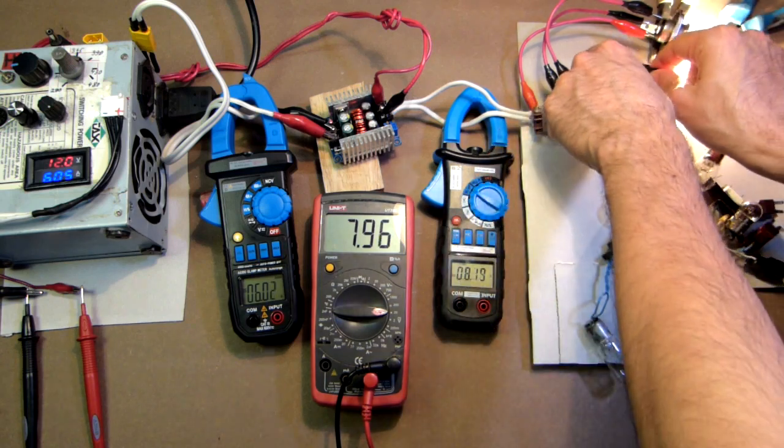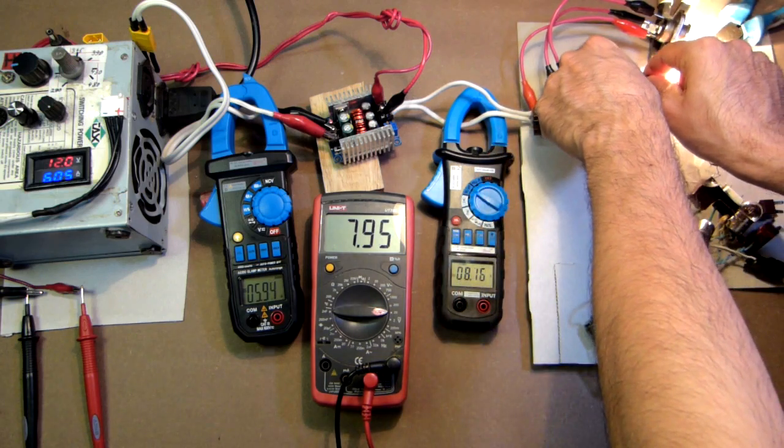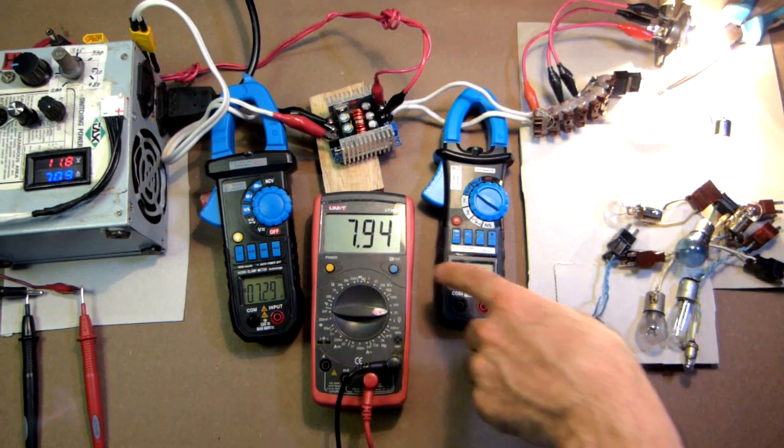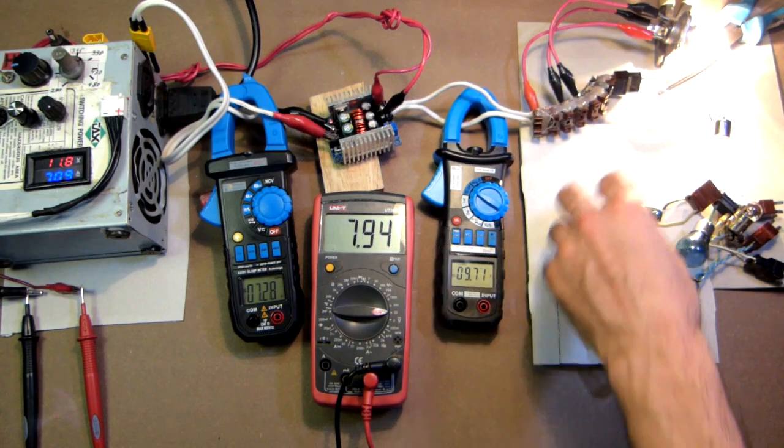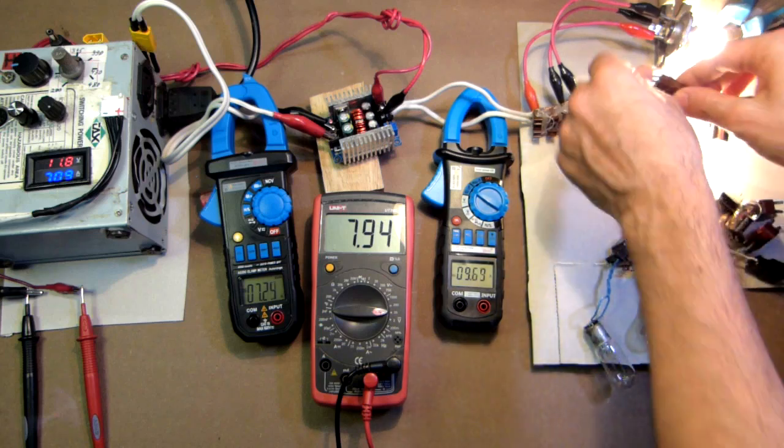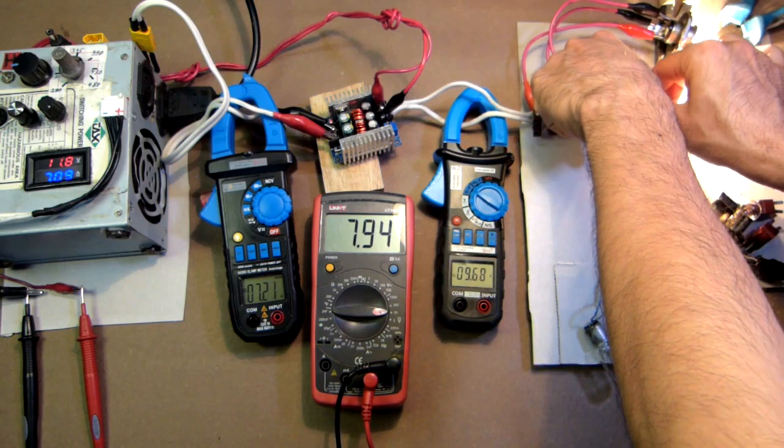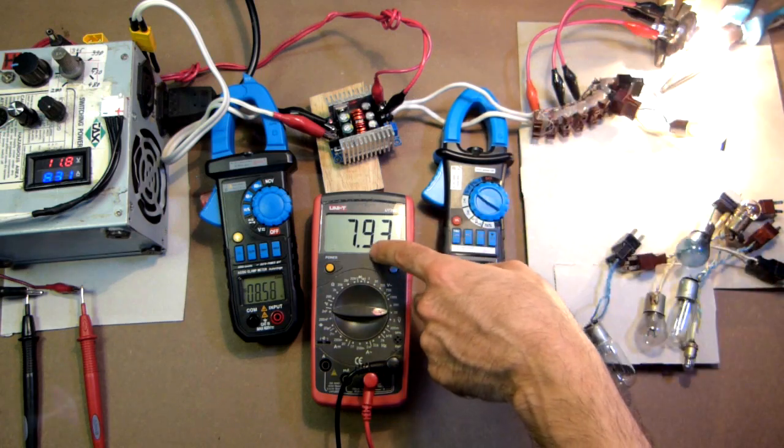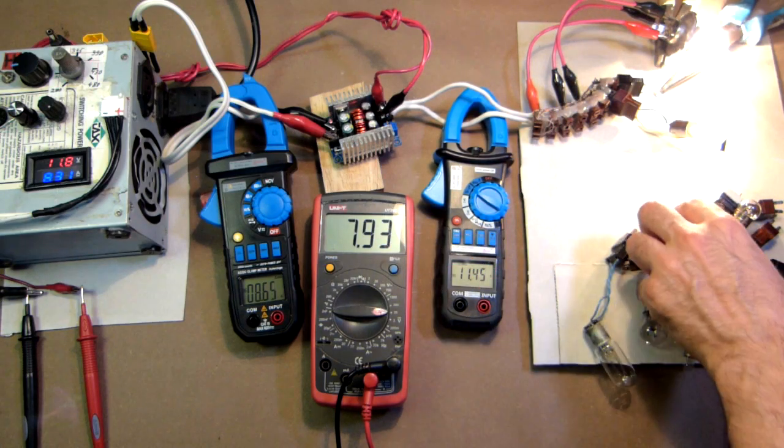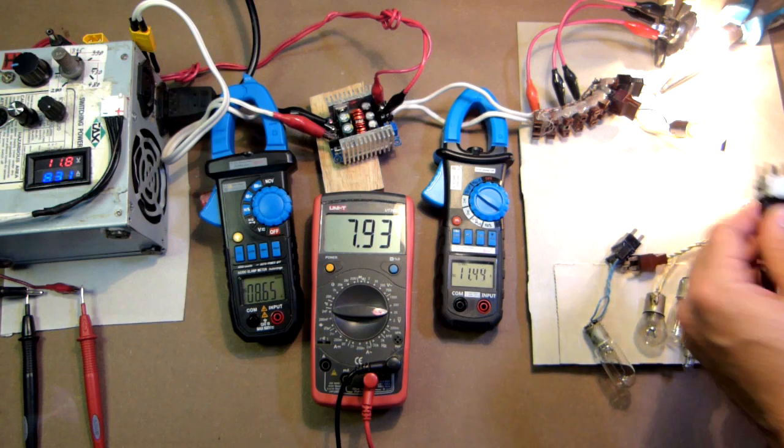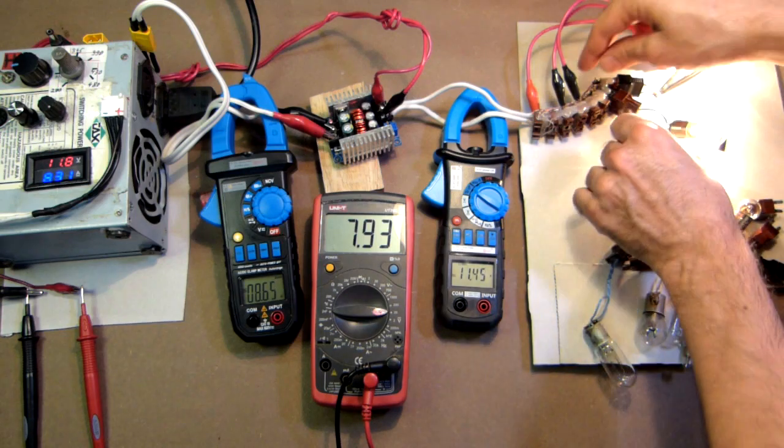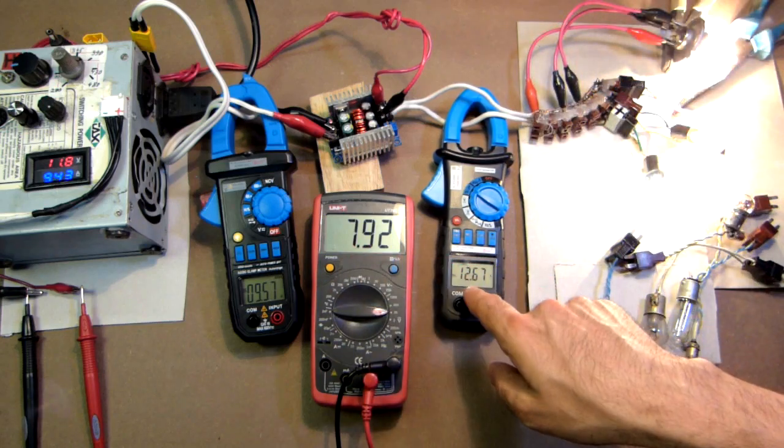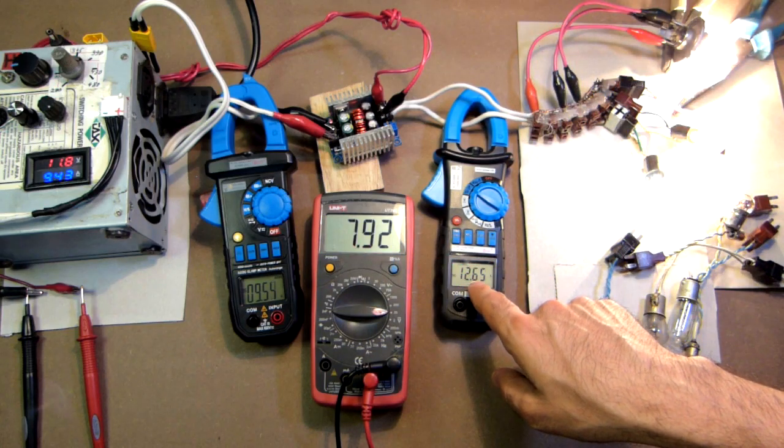20 watt car bulb. 7.9, 9 amps. 7.9, 11 amps. 12.6 amps. 7.9, 12.6 amps.